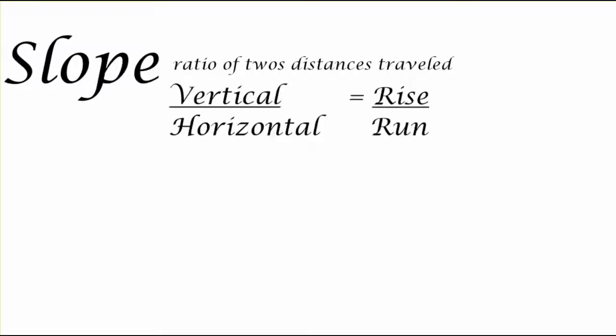Now before we investigate further, let's talk specifically about what slope means as we're referring to lines on a coordinate grid. Slope is the ratio of the two distances traveled, specifically a vertical distance and a horizontal distance, as we simply interpret as rise over run.